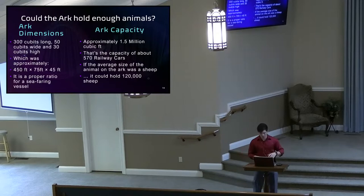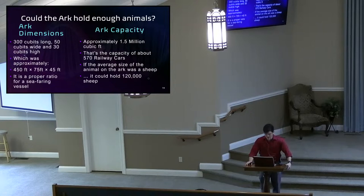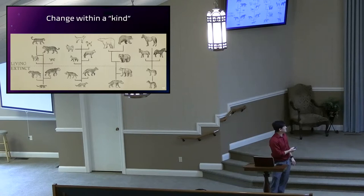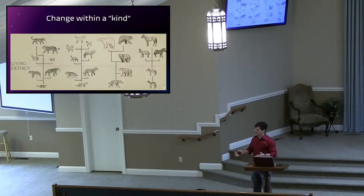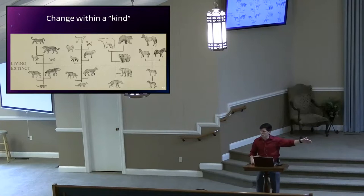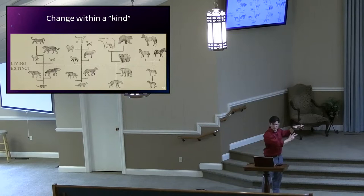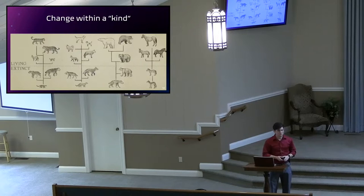The ark capacity was approximately 1.5 million cubic feet — enough to hold 570 railway cars. If the average size of each animal was a sheep, it could hold 120,000 sheep. Not everything was the size of a sheep, and a lot of stuff was much smaller. Because of the ability to express different genes and different outward characteristics, especially in an environment that lets all this flourish, you might just need one ancestor. All the dogs we see now have come from a wolf through breeding. The same kind of thing occurred kind-wise from the ark. It is not only plausible but seems very realistic that that actually occurred.